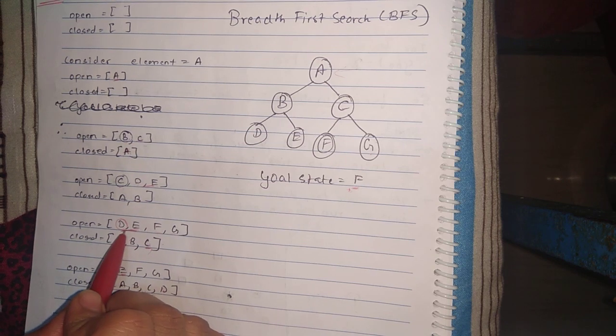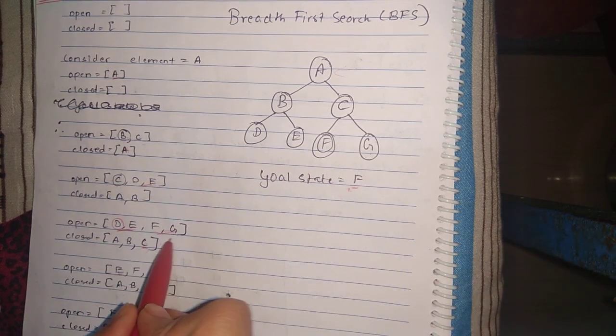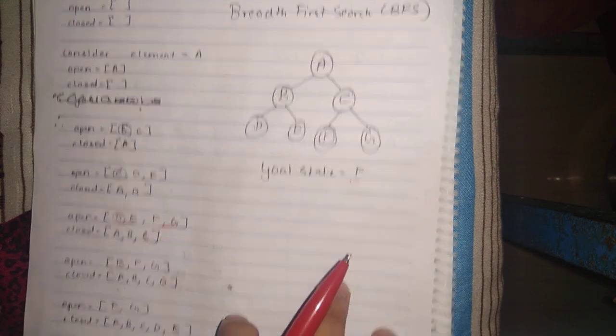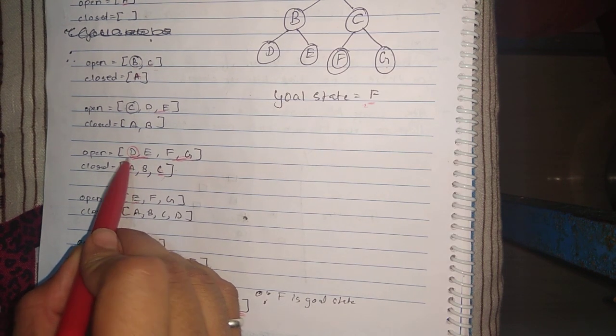Since D and E were already there, we will push F and G from back and place C in the closed array. The next element is D. D is also not the goal state.